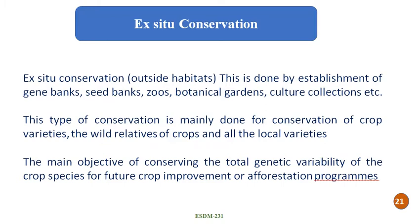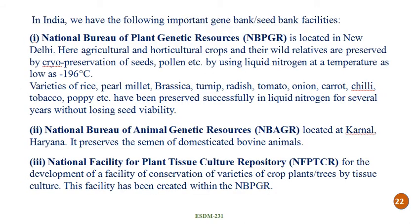Ex-situ conservation is conserving biodiversity outside or away from its natural habitat. This is done by establishment of gene banks, seed banks, zoos, botanical gardens and various cultures such as cell culture and organ cultures. This type of conservation is mainly done for conservation of crop varieties or wild relatives of crops and all local varieties having wild scope and importance in future. The main objective is conserving the total genetic diversity of crop species for future crop improvement and afforestation programs. In India, important gene bank or seed bank facilities are carried out by specific organizations.